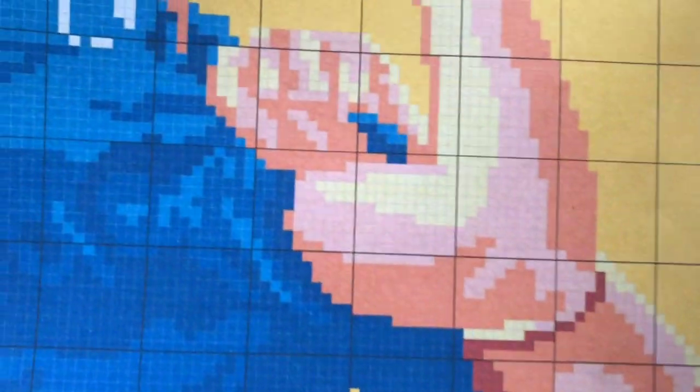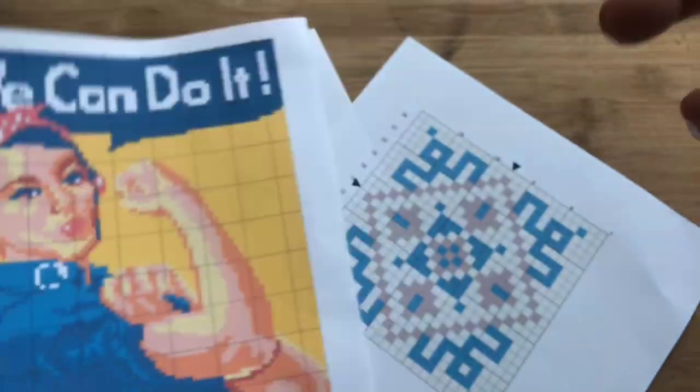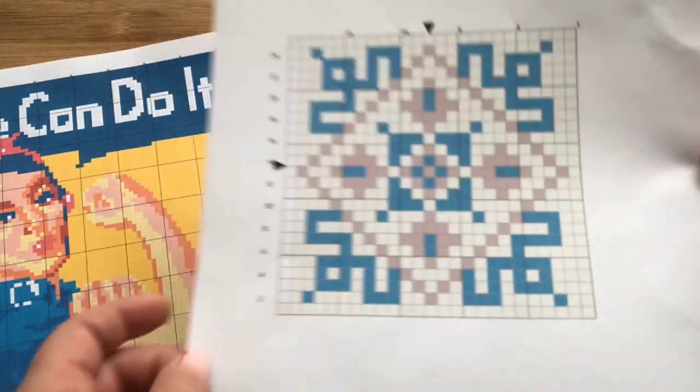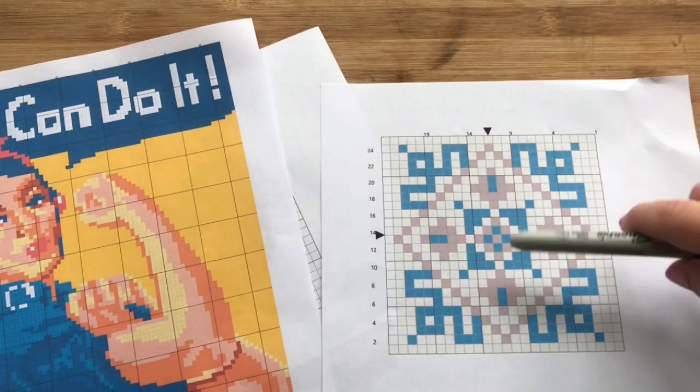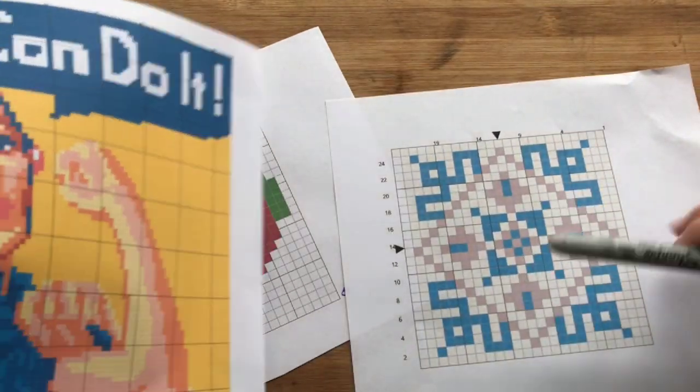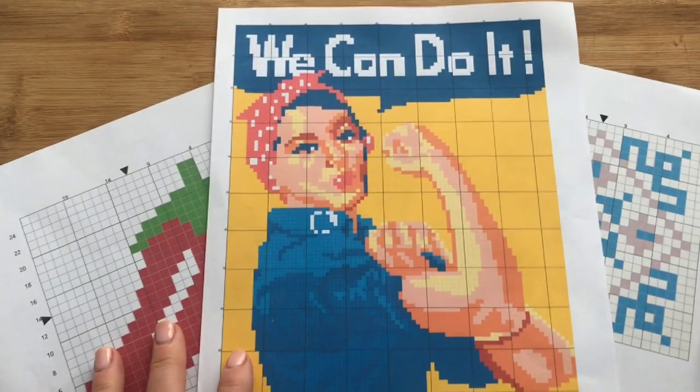As you can see with this, there's so many, it's really hard to see your color changes and your squares. Sometimes the larger sectioned off parts will help you with looking at it to see a larger square.